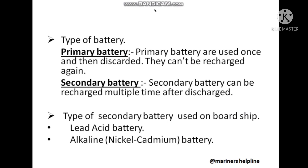Secondary batteries can be used and when they get discharged they can be charged again. These kinds of batteries are used for emergency power sources, for starting lifeboat engines, etc. Secondary batteries are further classified into two types: lead acid battery and alkaline batteries. Alkaline batteries are also known as nickel cadmium batteries. I will make a separate video describing these two batteries in detail.